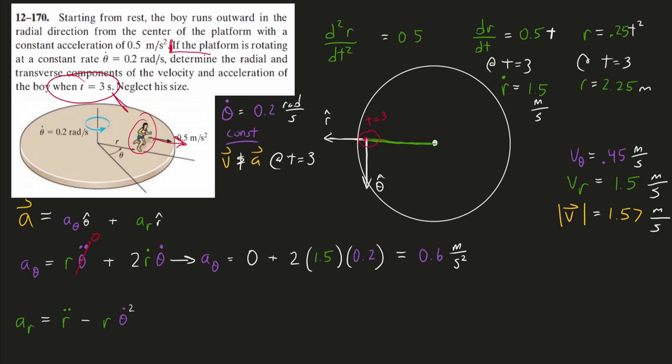As for my radial component, what is the second derivative of my r? What is my acceleration of r? This is going to be a constant 0.5 here. It never changes. I don't see a time variable or anything else to make this thing a variable.